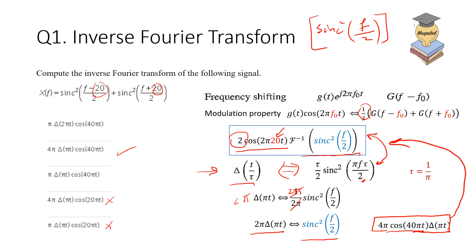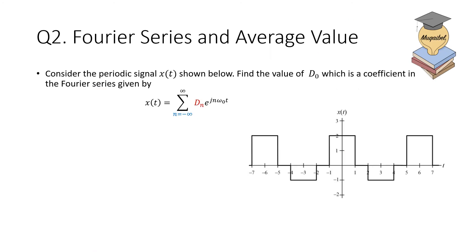For the next question, it says consider the periodic signal x(t) shown in the figure. Find the value of d₀, which is the coefficient in the Fourier series given by the following expression. This is the expression for the Fourier series. We can do this by inspection, which is just the average value—the first d₀ is the average value.